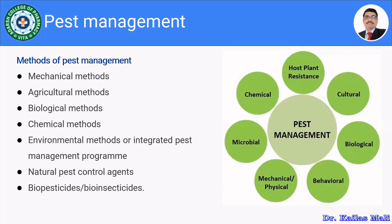There are so many methods by which it is possible to manage the pest in the farm or the medicinal farm. The ways are: the mechanical way, then certain agricultural methods, then the biological method, then the chemical method, then the environmental method — also known as integrated pest management program — which is a modern way. Then natural pest control agents, and the last one, biopesticide and bioinsecticide. Let us see one by one how these pests are going to be managed.